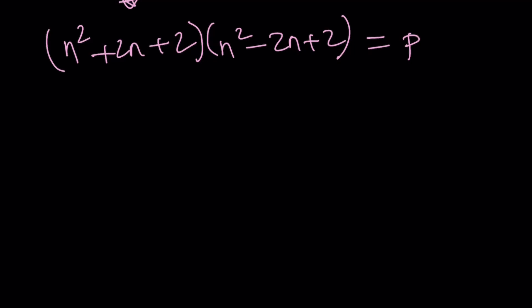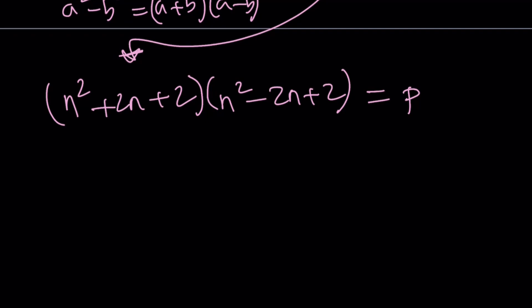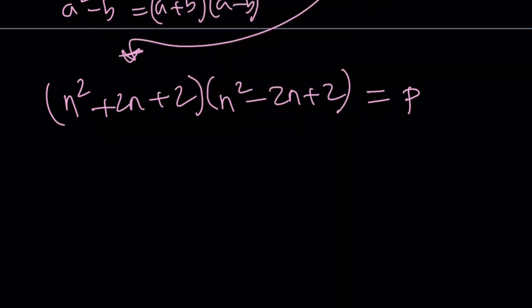And that's supposed to equal p, a prime number. Is this at all possible? First of all, prime numbers only have two factors themselves and 1. So in this case, how can this number have two factors if it's not factorable? Well, one of the factors can be 1, and in that case, it is going to be prime. So which one is going to be a 1? First of all, notice that n squared minus 2n plus 2 for positive integers is always less than n squared plus 2n plus 2. We're going to look at both cases.